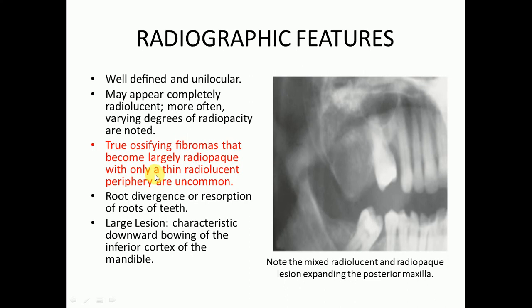True ossifying fibromas that become largely radiopaque with only a thin radiolucent periphery are uncommon. Root divergence or resorption of roots of teeth can occur with large lesions. A characteristic downward bowing of the inferior cortex of the mandible can also be seen. Here you can see a mixed radiolucent and radiopaque lesion expanding the posterior maxilla.